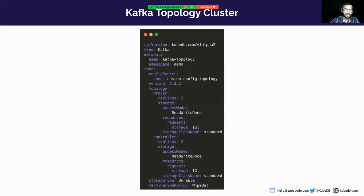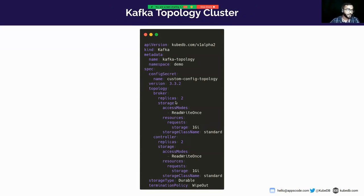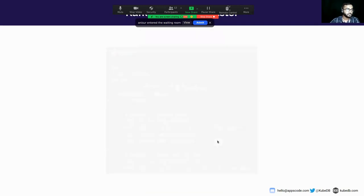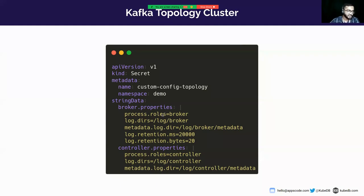The next slide is our topology cluster. As you know, in combined mode broker and controller run together, but in topology mode they run separately. In the topology section, broker configuration and controller configuration are specified separately. Similarly to the combined cluster, the remaining fields are the same. For the topology cluster secret, in stringData there are now two files: one for broker (broker.properties) and one for controller (controller.properties). We changed log.directory and some other fields — similar to the combined cluster.